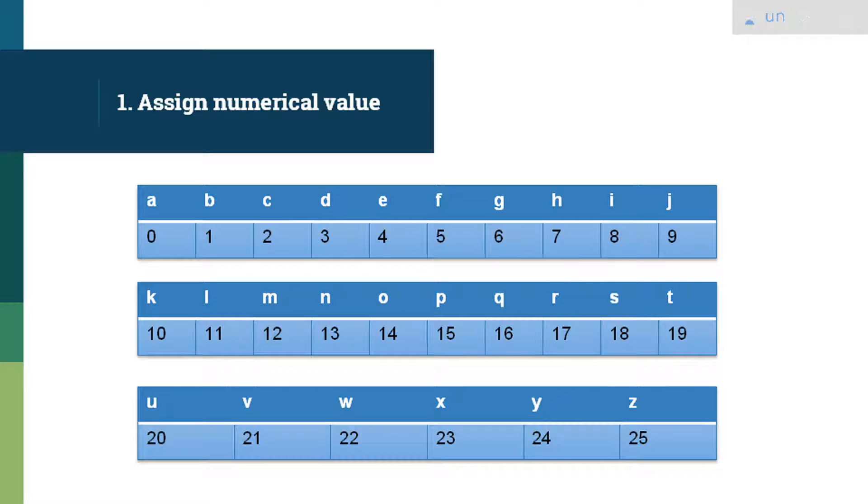Now, this is my first step. So we assign numerical values to each alphabet from A to Z. So as you can see here on the screen, I have first written all the alphabets in the natural order from A, B, C, D, E, F, going on till Z, and then I have assigned numbers to each one of them starting from 0 and going till 25.